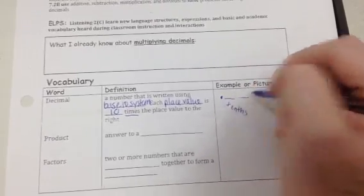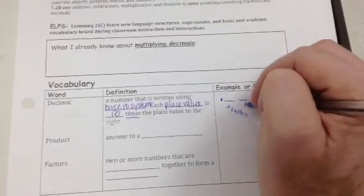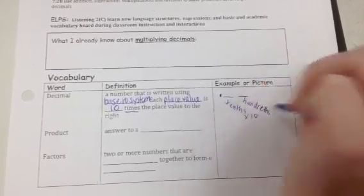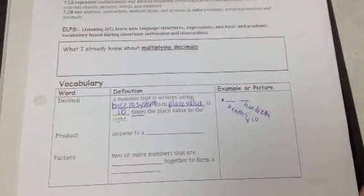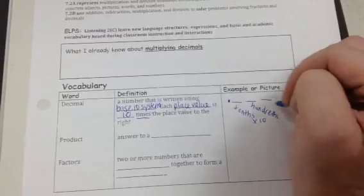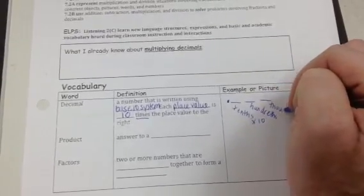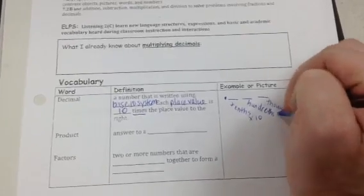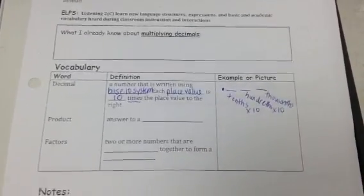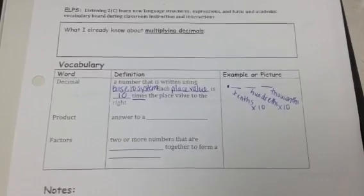But then when you go to the next number, that is the hundredths. That is 10 times the amount of the tenths place. Then the next one is called the thousandths, and that is 10 times the hundredths place, and so on. Every single one is 10 times the one to the right.